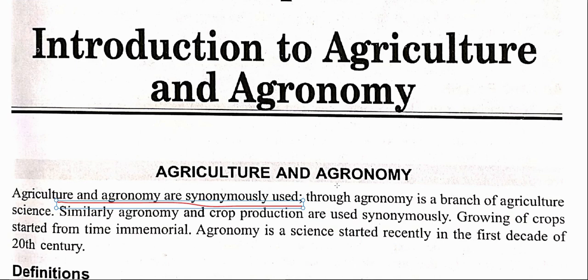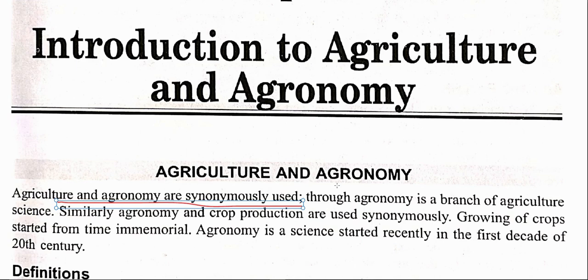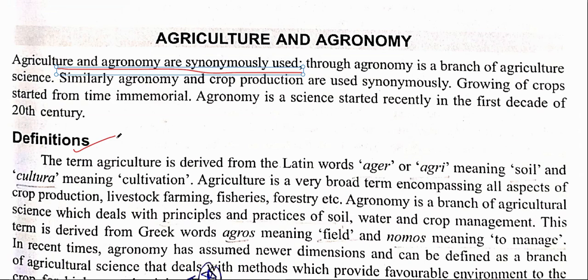Agriculture and Agronomy are synonymously used as they are relatively similar terms but yet different. The term agriculture is derived from the Latin word ager or agri, meaning soil, and the word cultura, meaning cultivation. So remember that agriculture is derived from a Latin word, while agronomy has been derived from a Greek word, which we will talk about shortly.